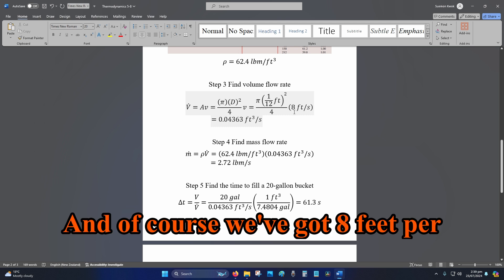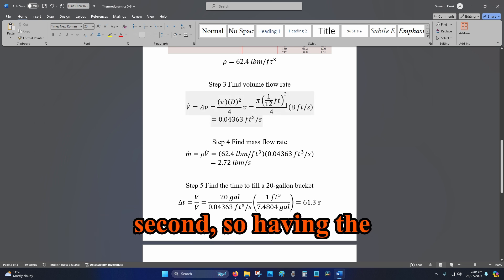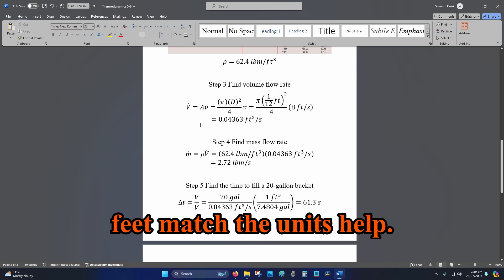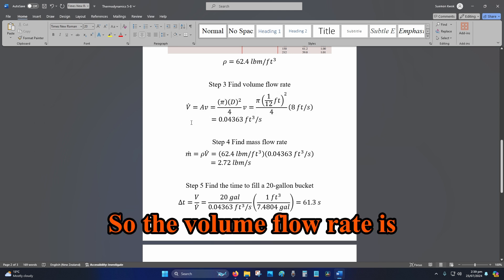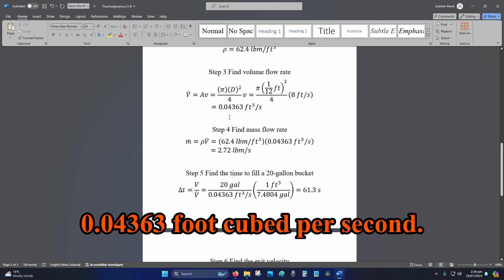And of course, we've got 8 feet per second, so having the feet match the units help. So the volume flow rate is 0.04363 foot cubed per second.